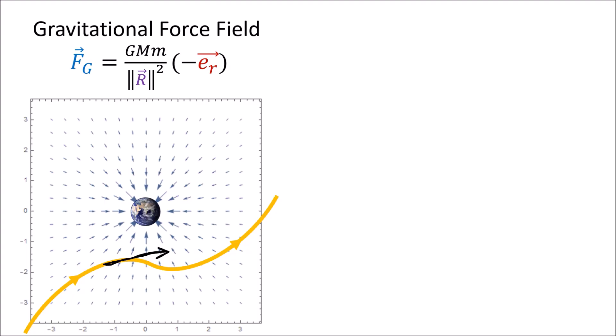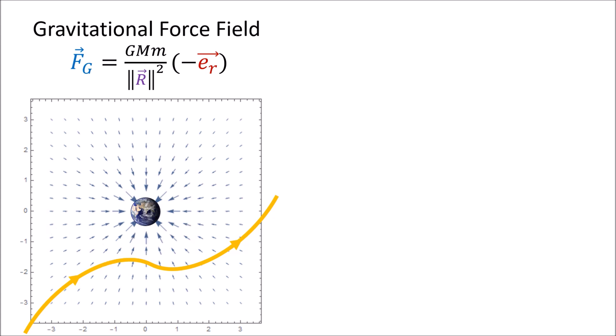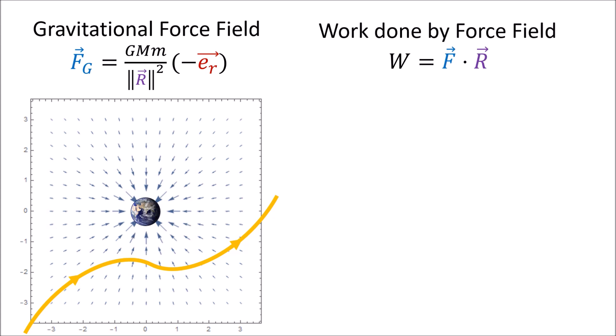Some of the object's motion along the path is due to gravity and the rest due to something else, like rockets propelling it in different directions. We want to compute only the work done by gravity. Normally we take the dot product of force vector F and displacement vector r, but since the force field is changing everywhere in space and the path is curved, that formula isn't good enough anymore. We need an integral that computes the dot product between the force vector and the vector dr everywhere along this path.